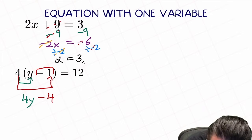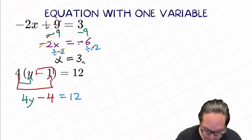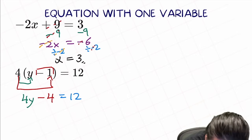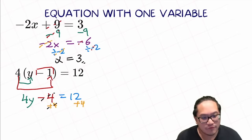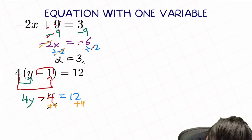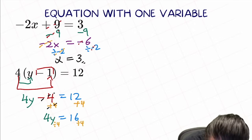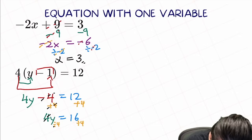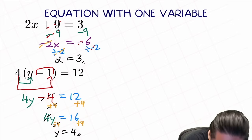Now this is a format that you're familiar with. We have minus 4, so we do plus 4 on both sides. Negative 4 will cancel with the plus 4. We're left with 4y equal to 12 plus 4, equal to 16. And what is the next step? Divide by 4, to cause that to cancel out the multiply-4. We're left with y equal to 16 divided by 4, which is just 4.